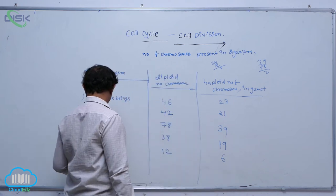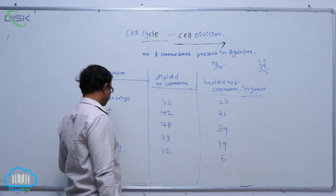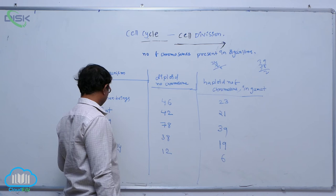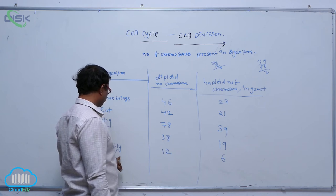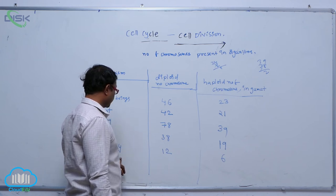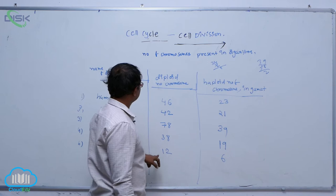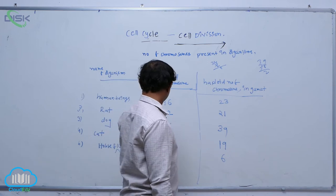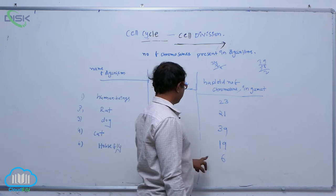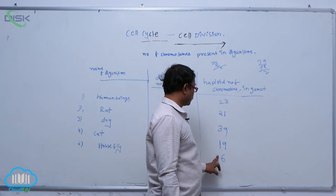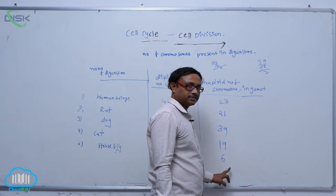In the housefly, the diploid number of chromosomes is 12 and the haploid number of chromosomes is 6.